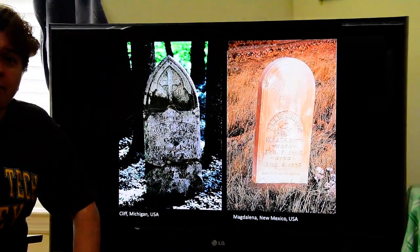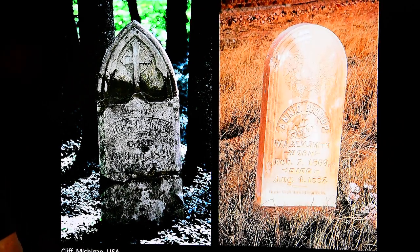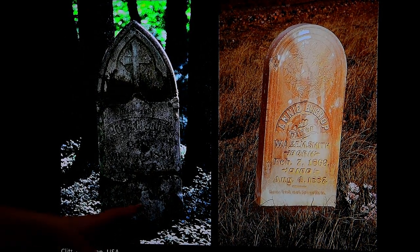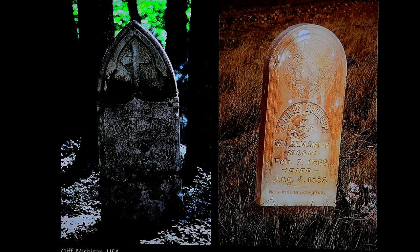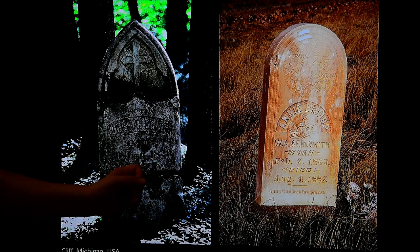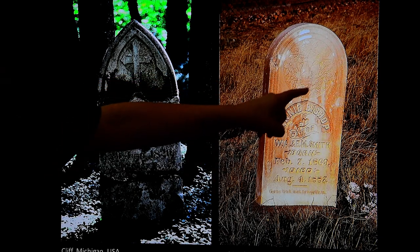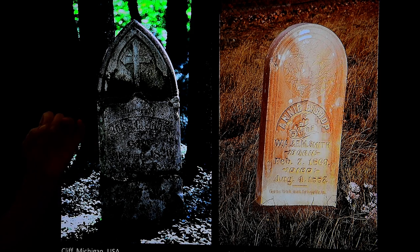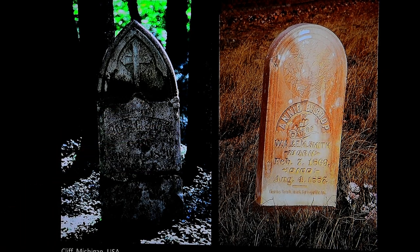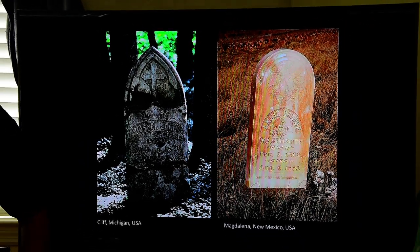These are two headstones from the late 1800s. Back then, headstones were fashioned out of white limestone, and limestone is very susceptible to dissolution. This headstone is from 1882 and is in Michigan — I can barely even read it. This one is from 1887, very similar in age, but you can still easily read all the words and see the carving. That's because it's in New Mexico, an arid area with less precipitation and therefore less dissolution. So climate can be very important in controlling how much weathering occurs and how fast it occurs.